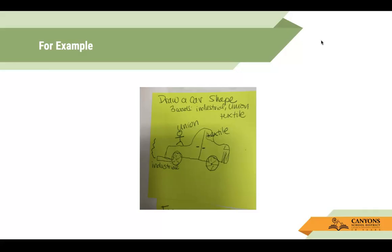Here's an example. Let's say you are studying the industrial revolution and the words are 'industrial,' 'union,' and 'textile.' Have the kids draw a car and put those three words on the picture where it makes sense to them, then have them explain why. In this example, a student put 'industrial' by the muffler because they associated industrial with big smokestacks and machinery. They put 'union' by the person because unions are made up to protect the workers. And 'textile' was placed on the upholstery inside the car because that's what they were thinking of when they thought of textiles.